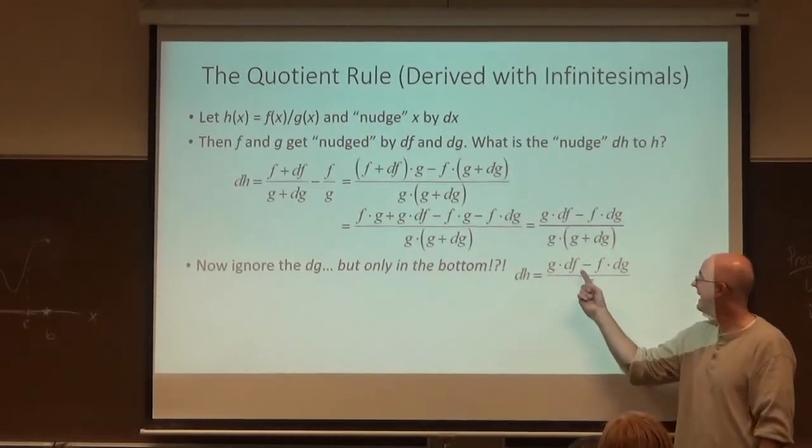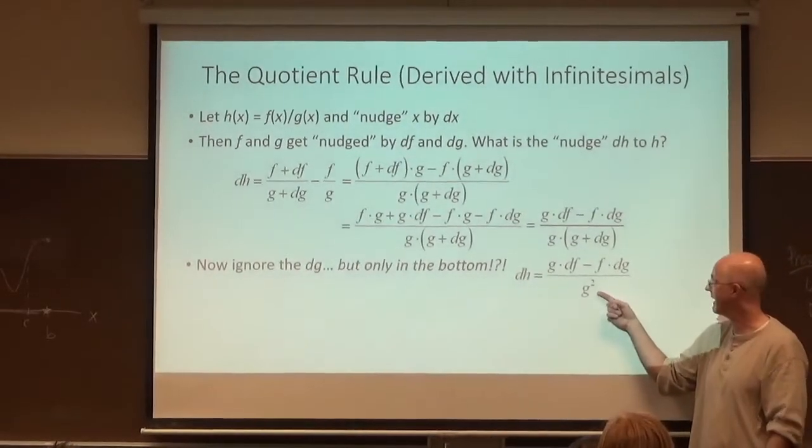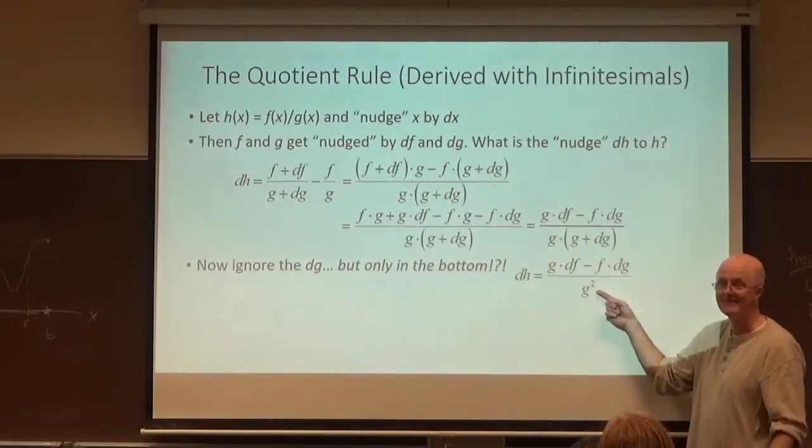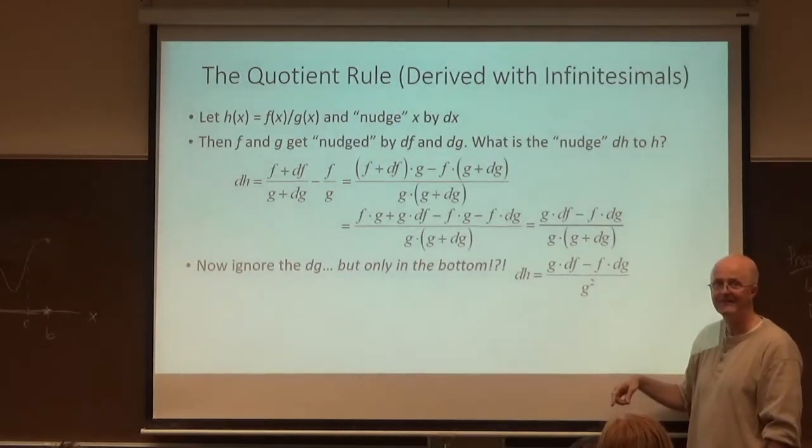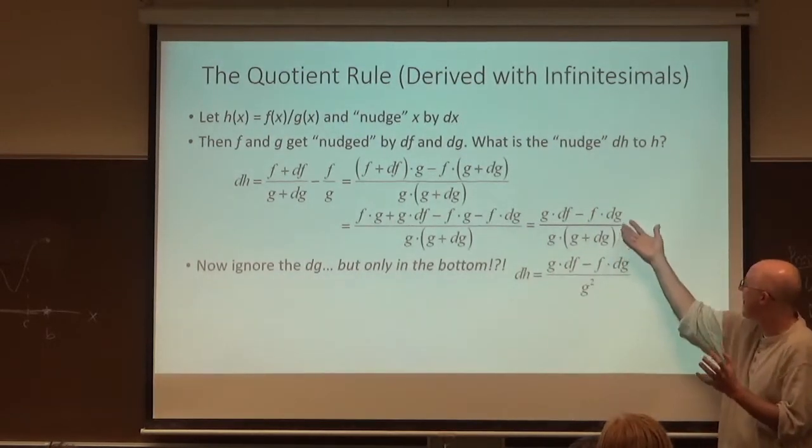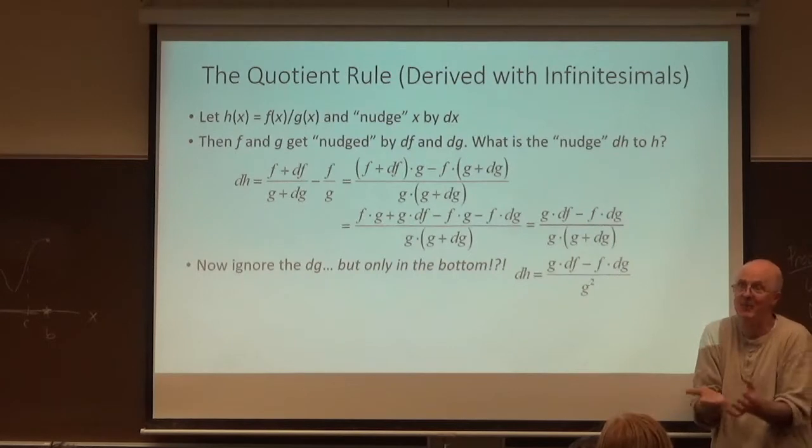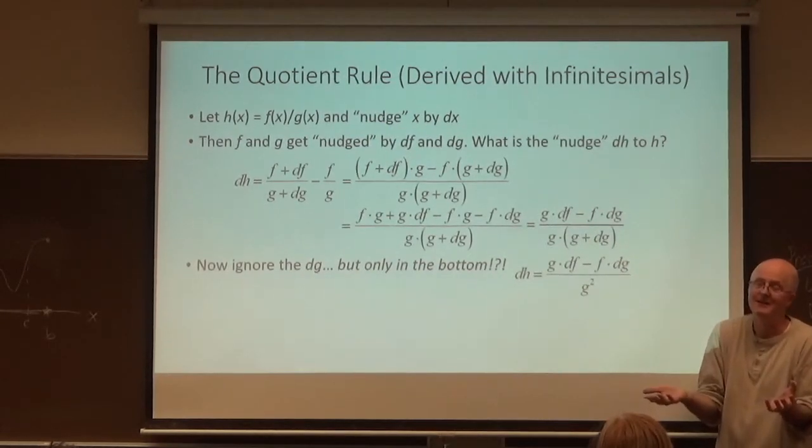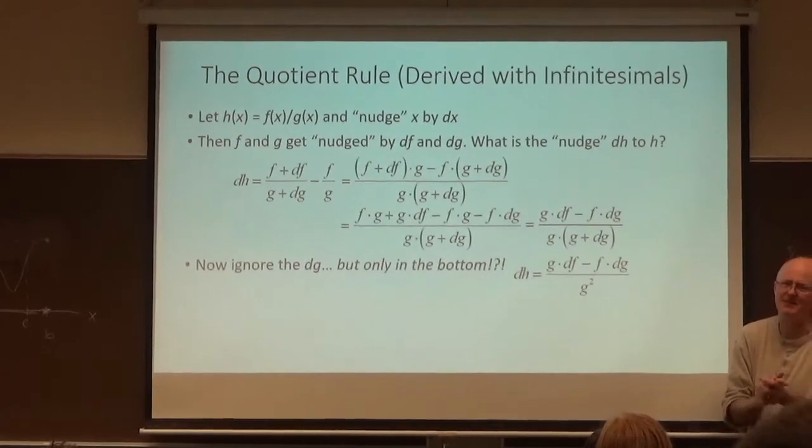Low d high minus high d low over the square once below, except without any x's in there. But again, the x's are in the background. So again, it's just like, why just in the bottom? You can partially justify it by saying it gets you the right answer. But what if you didn't know the right answer? It has to be mysterious at the moment. This is not a rigorous method.